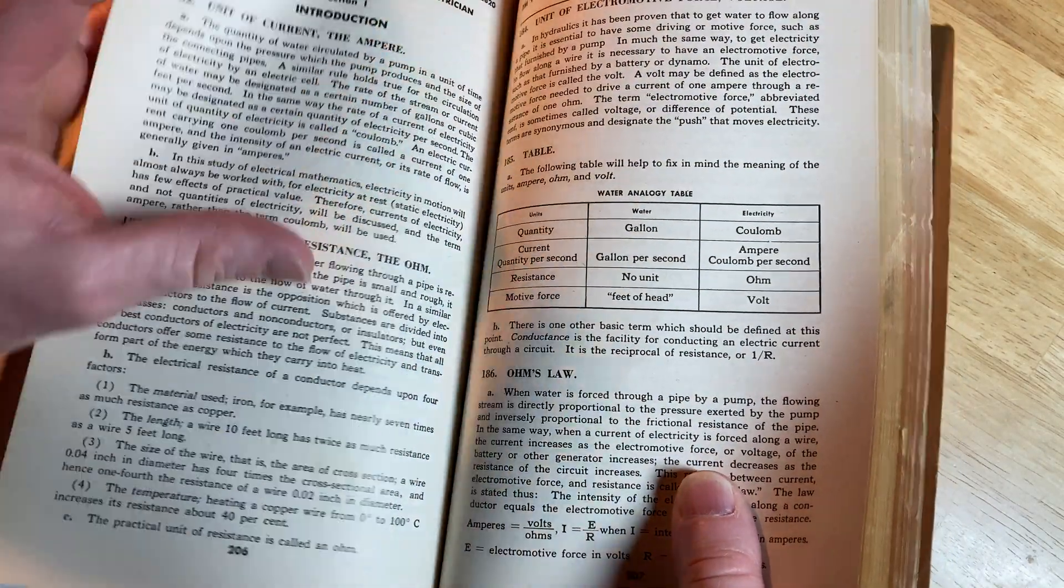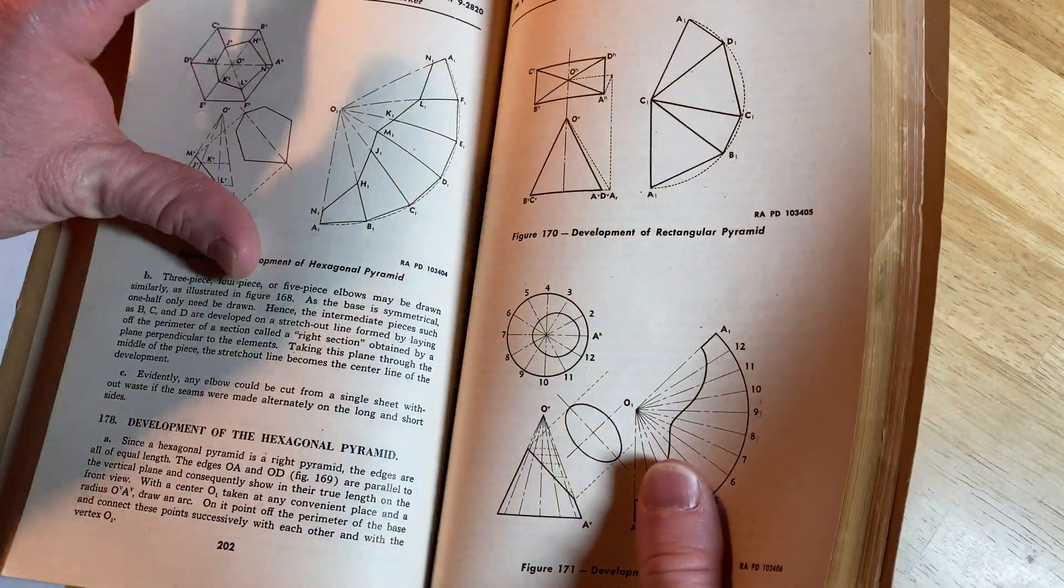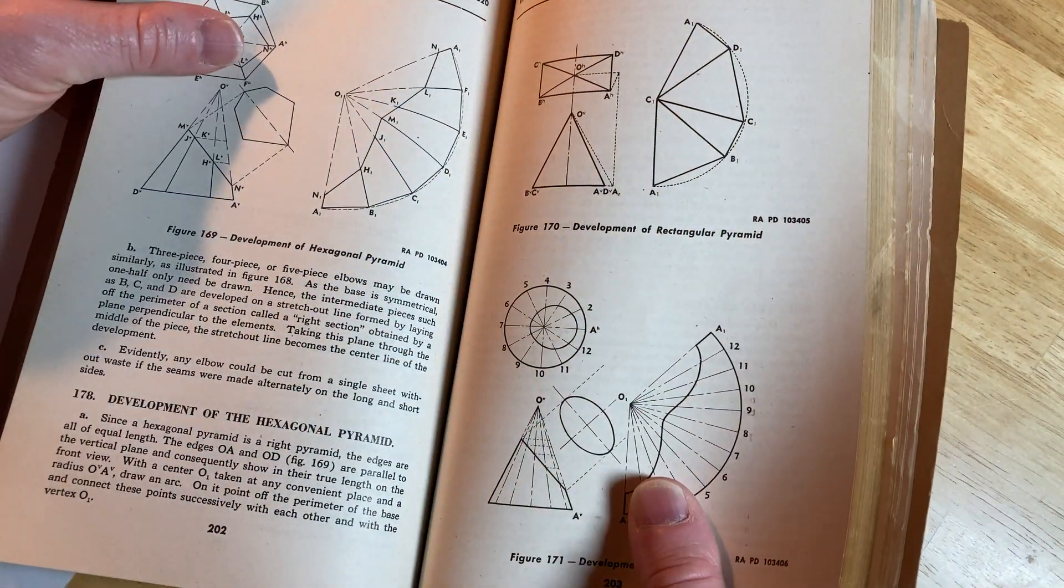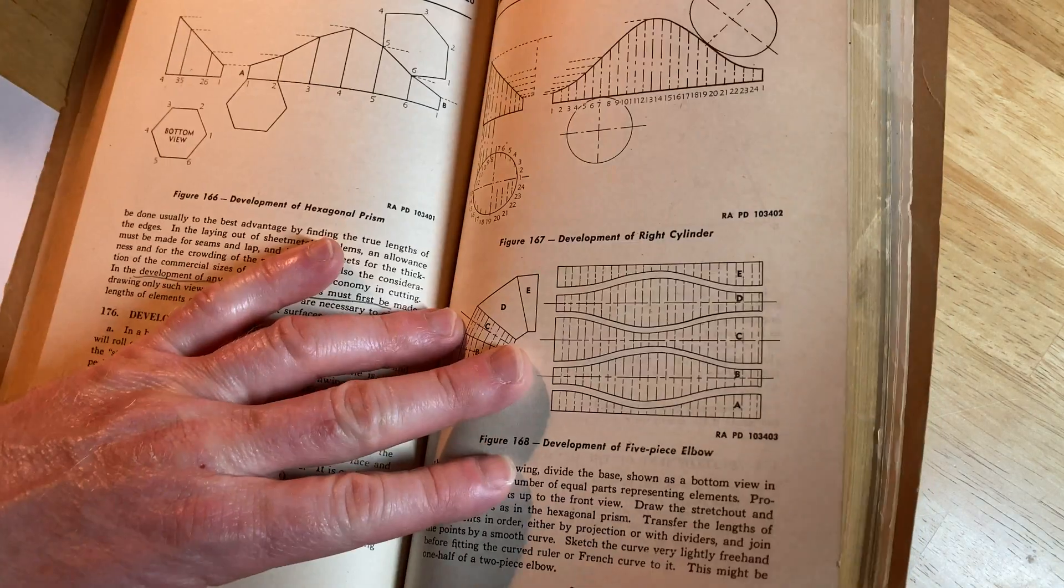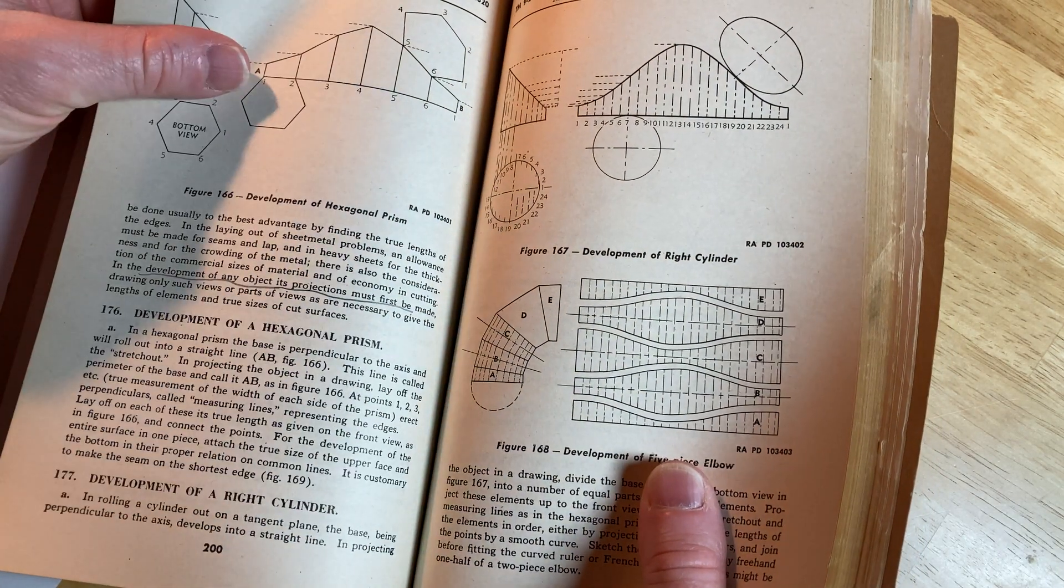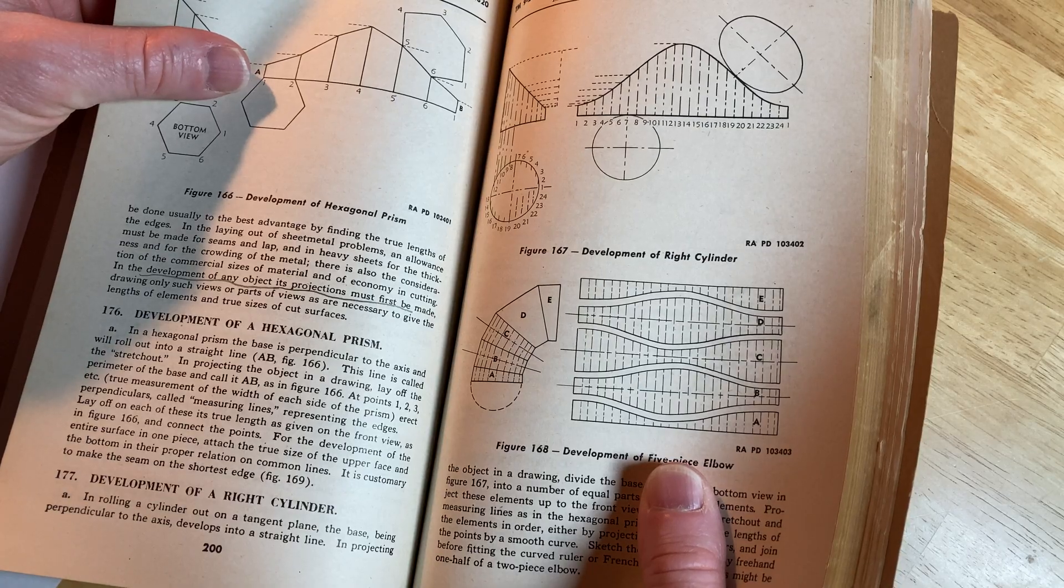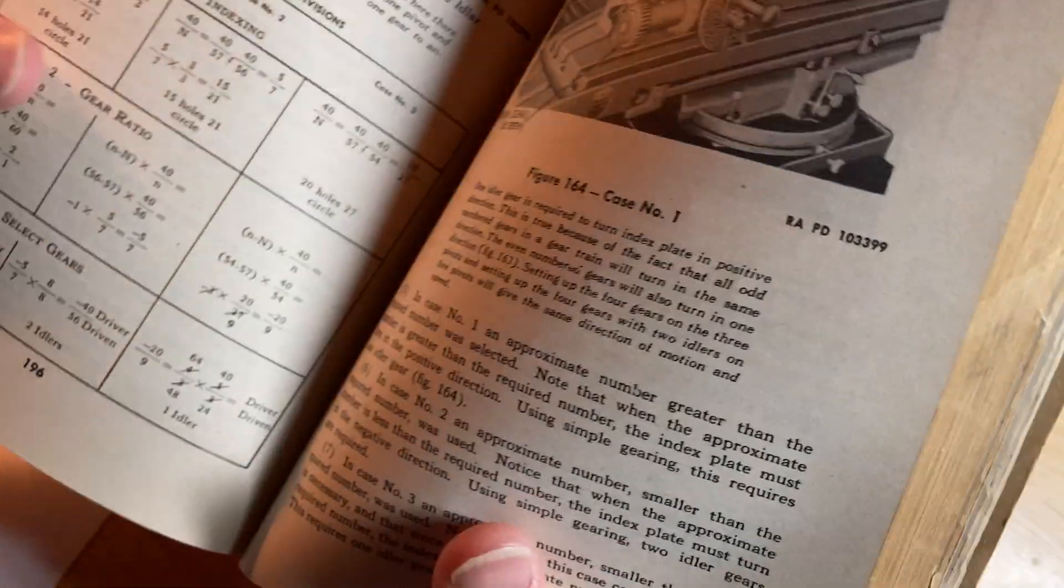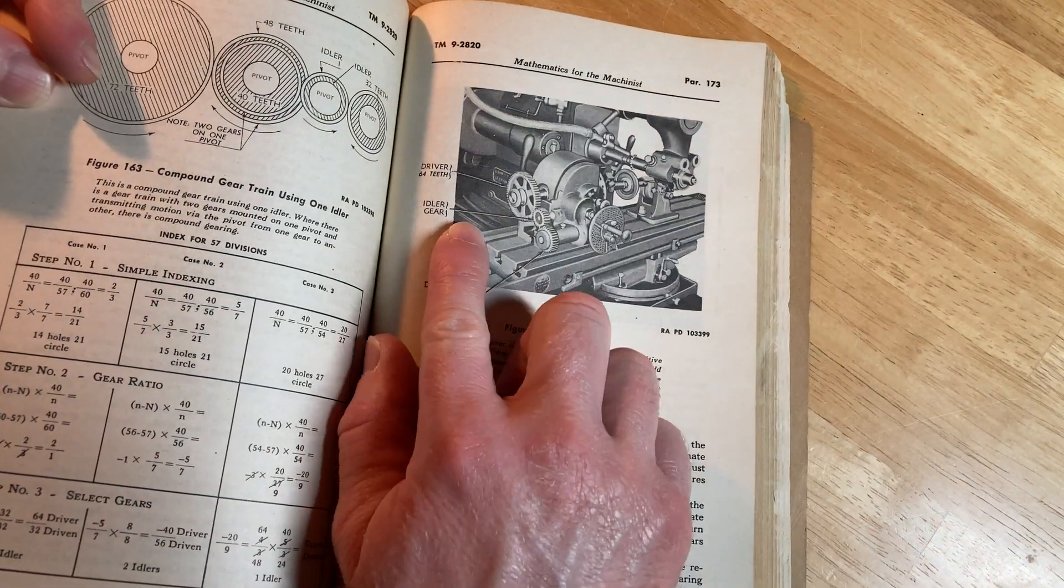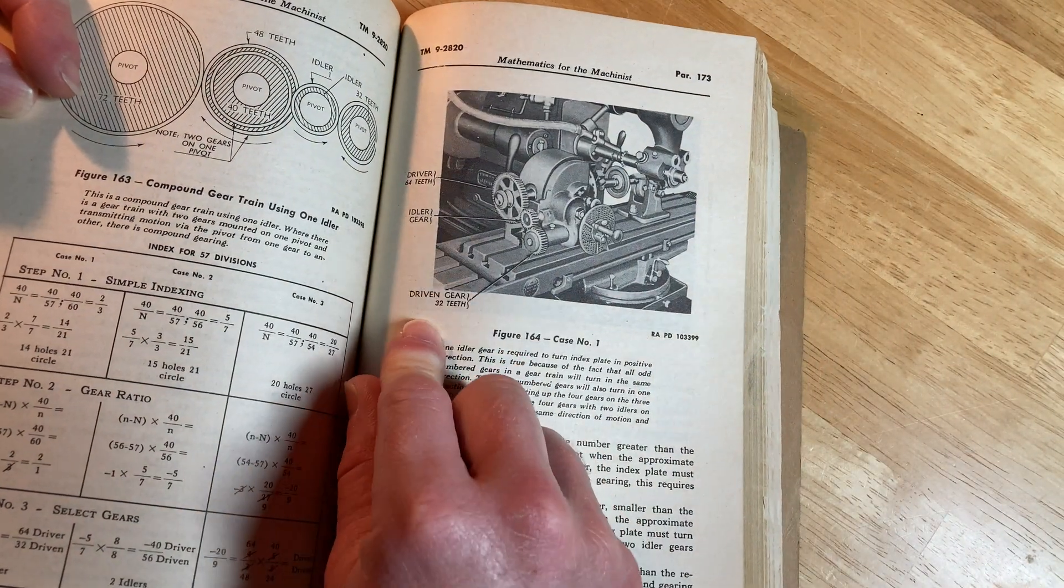He'll, like, buy the stuff and make things. He knows about remote controls and how to get them to work and stuff. It's pretty cool. Mathematics for the sheet metal worker. Oh, the scent. It's calling me. There's a cool picture. Driver. 64 teeth. Idler gear. Driven gear.